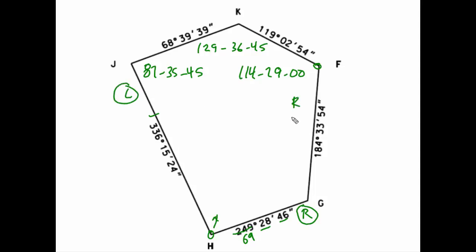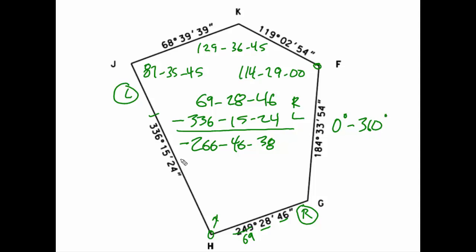You may already see we will have a small issue here. 69, 28, 46, minus 336, 15, 24 will clearly give us a negative number. My result will be negative 266, 46, 38. Well, you know that an acceptable azimuth falls in the range 0 degrees to 360 degrees. So to fix this, I simply add 360 degrees.